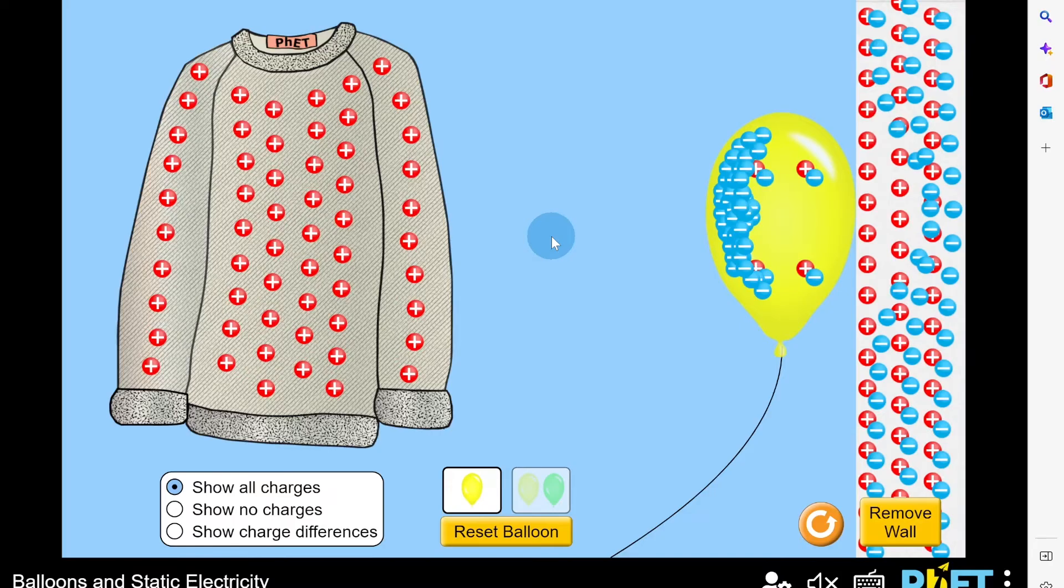This is something you can try for yourself. If you get a balloon, blow it up and then rub it on your jumper or your hair, you'll build up a negative charge on that balloon surface. You can then get the balloon to make your hair stand up or stick it to a wall.